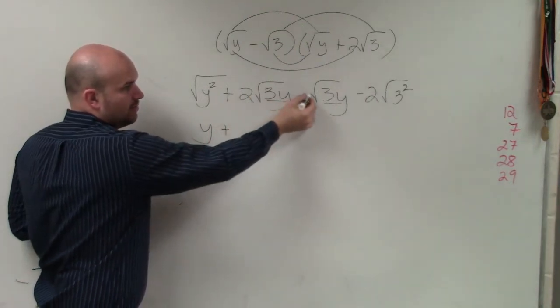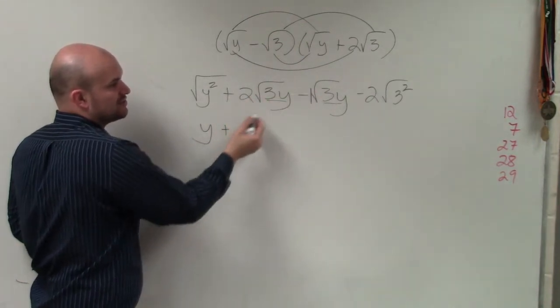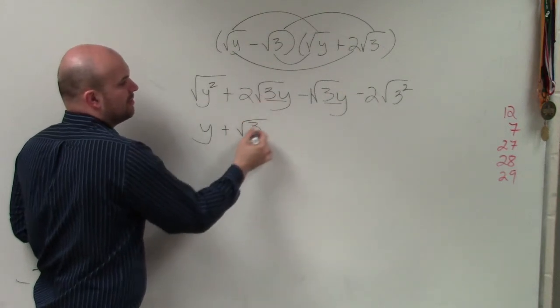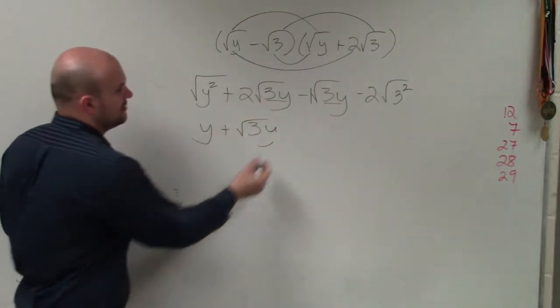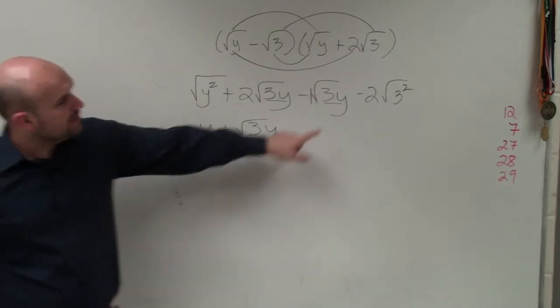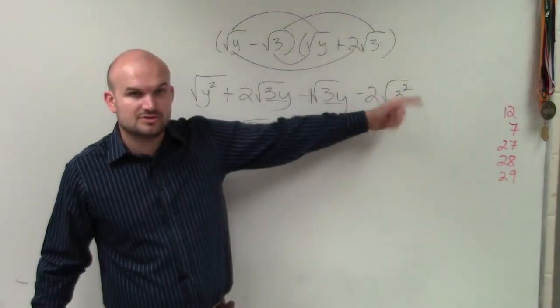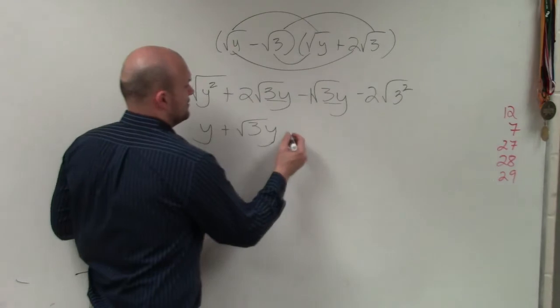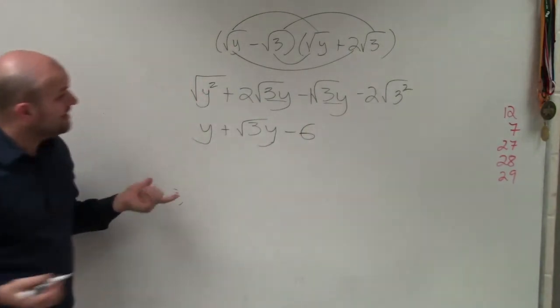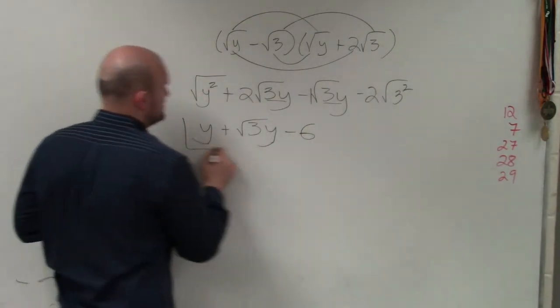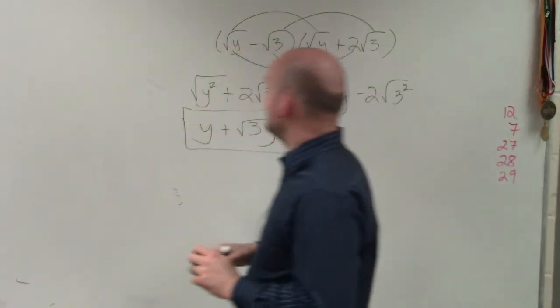There's a 1 right there. 2 minus 1, so it's just 1 square root of 3y. I'm not going to write the 1. I'm just going to leave it like that. And then we have square root of 3 squared, which is really just 3. 3 times 2 is negative 6. That's all my terms I can combine. So that is going to be my final answer.